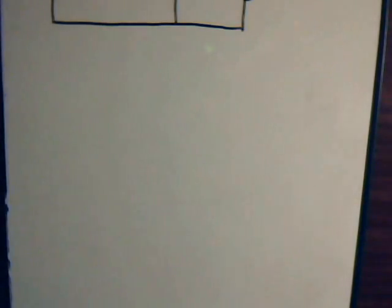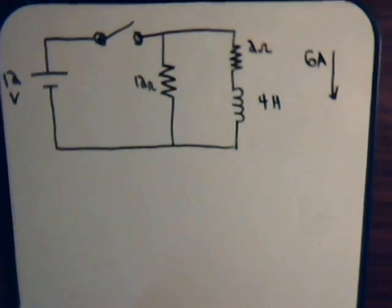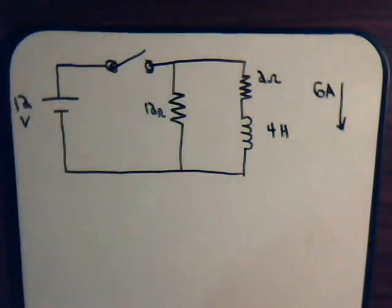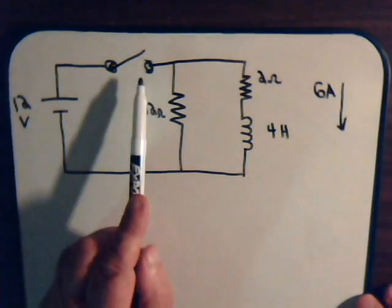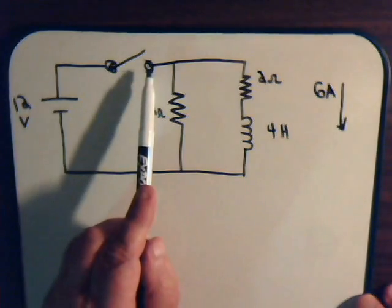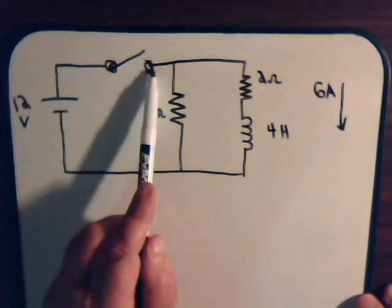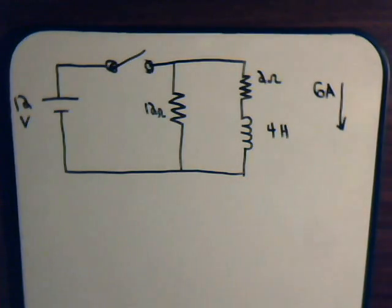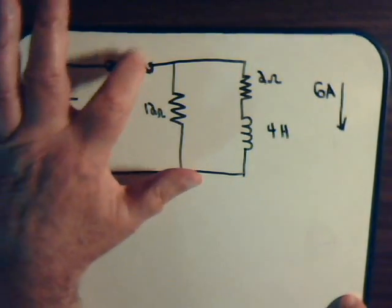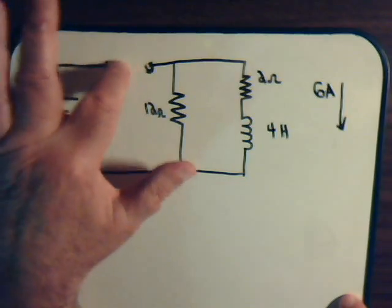As we discussed in the last video, that essentially is the principle of the automotive ignition system. And that's why here we have a discharge resistor. Now we're asking ourselves, with the discharge resistor present, what will be the voltage drop across these terminals when we open up the switch? That's the question we're going to answer. But let's go back to the beginning.